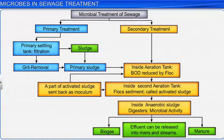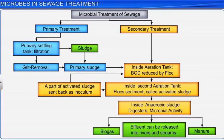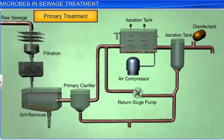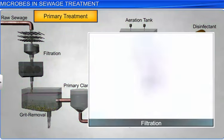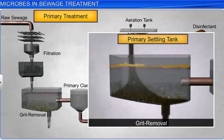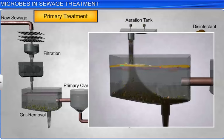Let's take a look at how microbes help in sewage treatment. Microbial treatment of sewage usually takes place in two stages: primary and secondary treatment. In the primary stage, the objective is to remove coarse solids and other large and small particles found in sewage. The first step of primary treatment involves filtration, which is followed by grit removal inside a primary settling tank. All the floating debris is removed by sequential filtration, whereas the grit such as coarse soil or pebbles is removed via sedimentation.